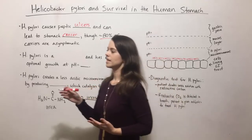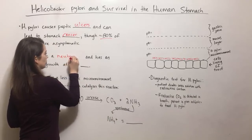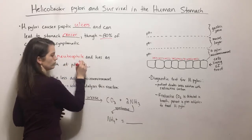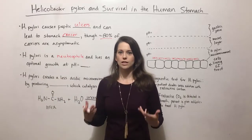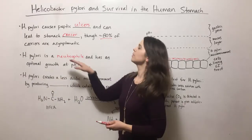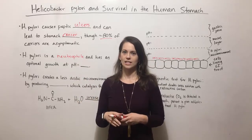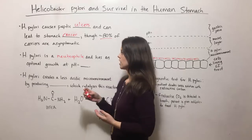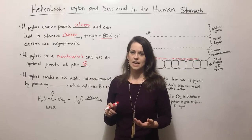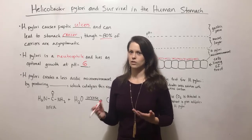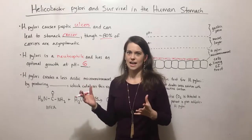Helicobacter pylori is also a neutrophile. That might surprise you, because it infects the human stomach which has lots of acid in it. So how can it be a neutrophile — a bacterium that thrives in more neutral conditions and is not able to grow in acidic conditions? It actually has an optimal growth right around a pH of 6. We know that stomach acid is a pH of 1 or 2, so this seems to be a disconnect. How does this work?